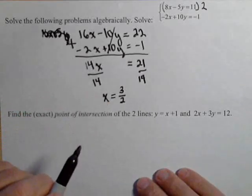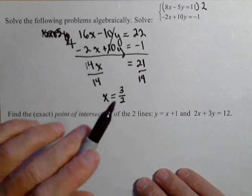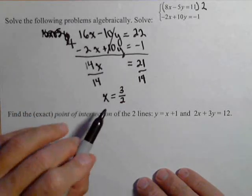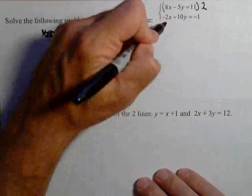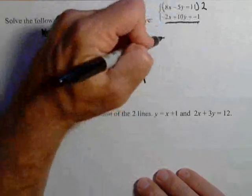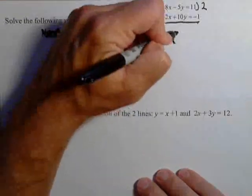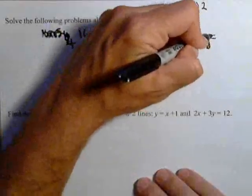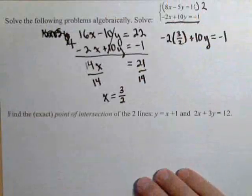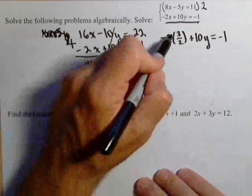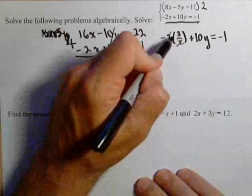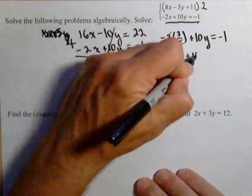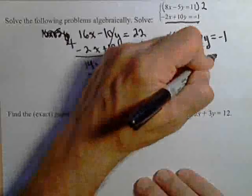Now we do need to go and find y. I can plug this into either of my equations. I should get the same value of y if I solve this first part correctly. So let's use this second equation. So negative two times three halves plus 10y equals negative one. And now we'll simplify. The twos will cancel. So we have negative three plus 10y equals negative one.